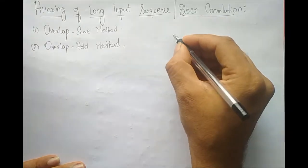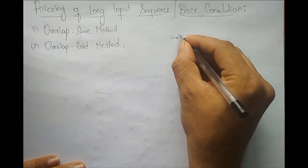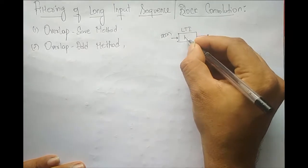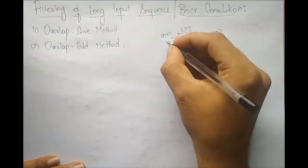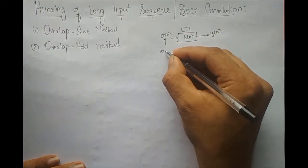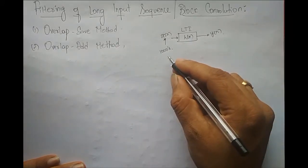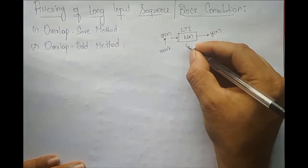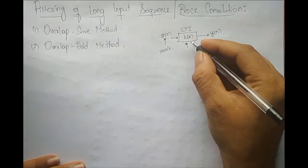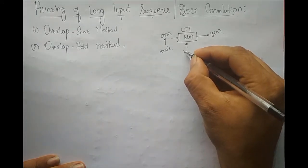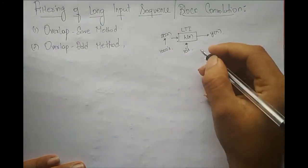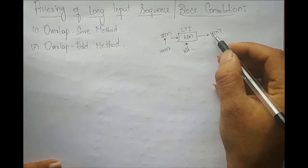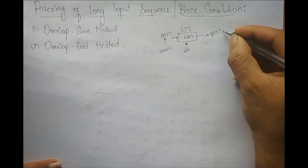In practical applications, when we perform a filtering operation, most of the time we will have an LTI system. The input is x of n, the impulse response is h of n, and the output is y of n. Practically speaking, the length of the input sequence will be in terms of thousands of samples, depending upon what sampling frequency we use. Whereas the impulse response, depending upon the order of the filter we are designing, is very few — in terms of tens. The output y of n, which is the output of an LTI system, is nothing but linear convolution.